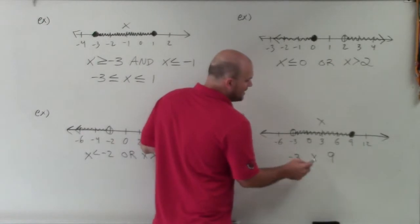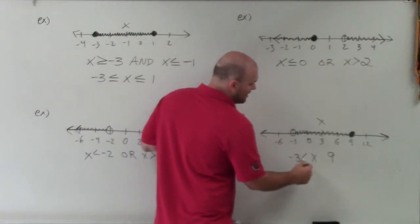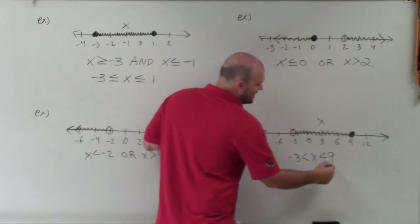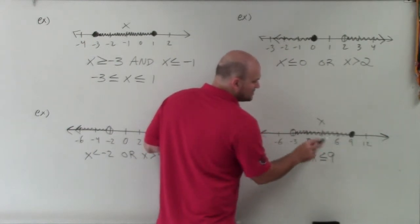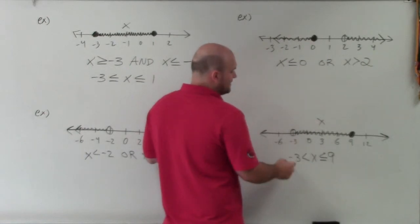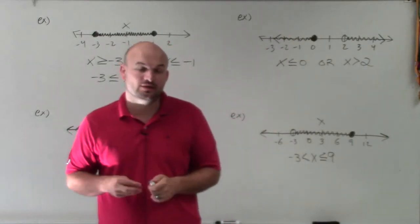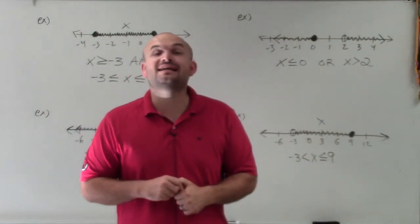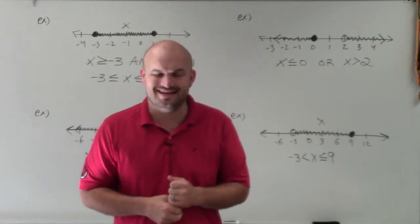Therefore, all these, my x values, have to be greater than negative 3, because that's open. But they have to be less than or equal to, because that's closed, 9. So they have to be greater than negative 3, but less than or equal to 9. And that's how you can just write it as one single inequality. So there you go, ladies and gentlemen. That is how you write a compound inequality from a graph. Thanks.